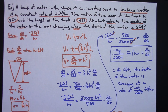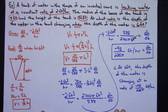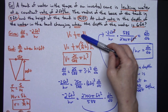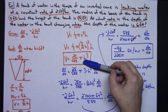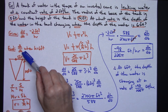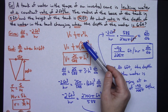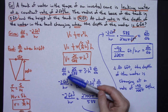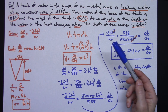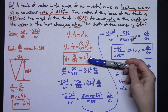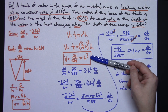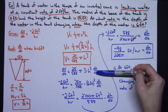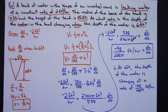Cone examples in related rates tend to be the hardest because people forget to reduce the equation to just one variable — preferably the one you're solving for. If I were finding dr/dt instead, I would have solved for h in terms of r. But really, the only calculus in a related rates problem is when you take your simplified geometric equation and differentiate it implicitly with respect to time.